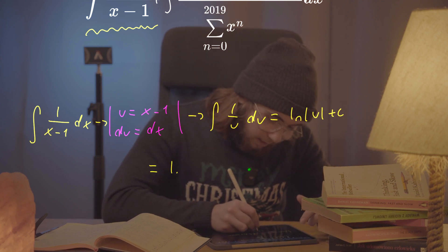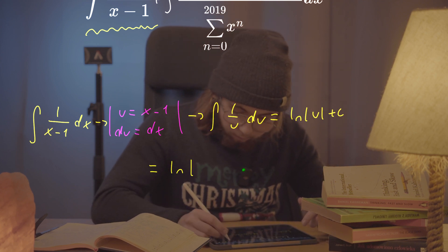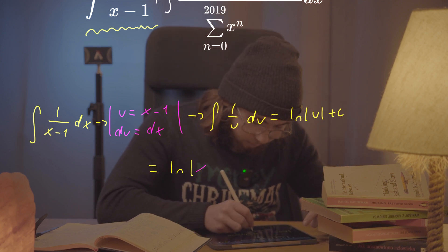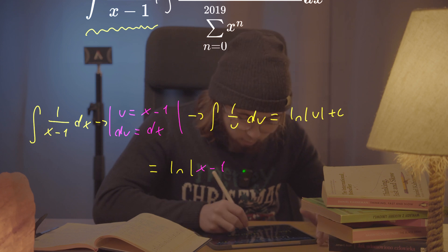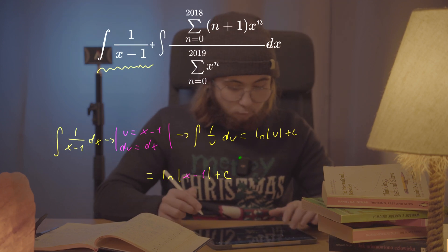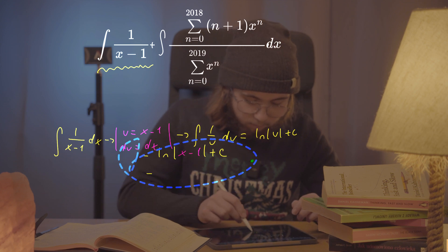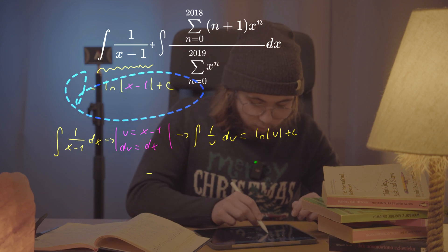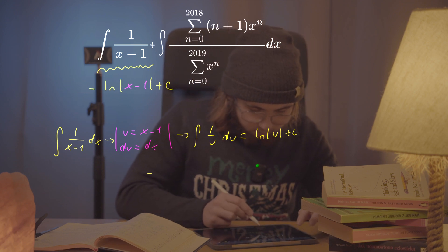Reminding ourselves that we did a u-substitution, we'll get the natural log of the absolute value of x minus one — which was our u — and then plus our constant C. So we get our answer right over here.